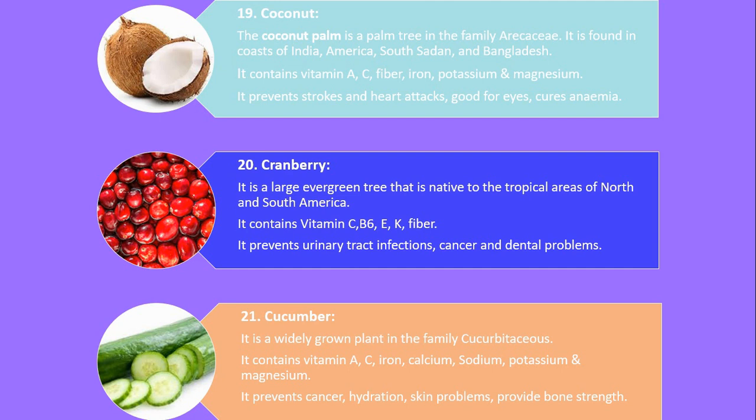Number 20. Cranberry. It is a large evergreen shrub native to the tropical areas of North and South America. It contains vitamin C, B6, E, K and fiber. It prevents urinary tract infections, cancer and dental problems.